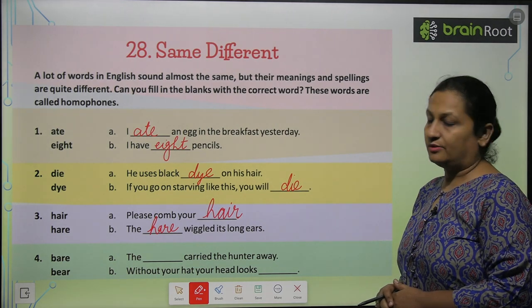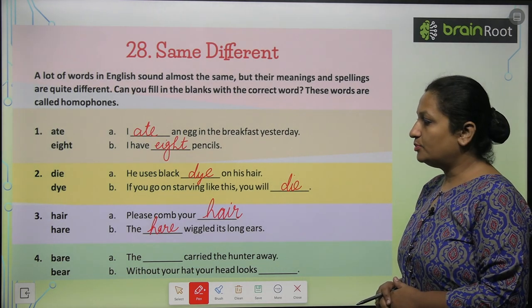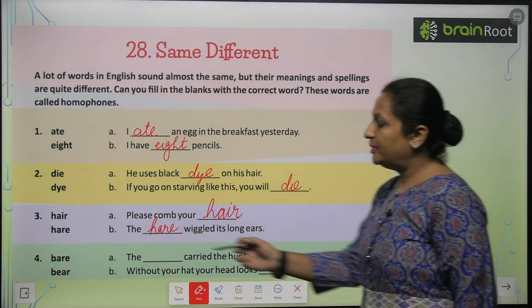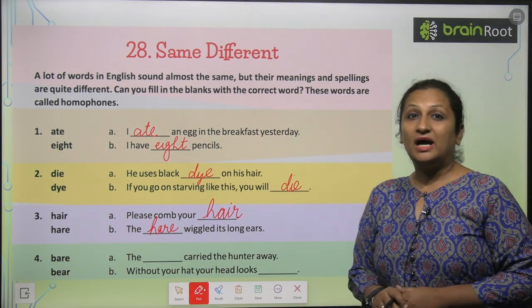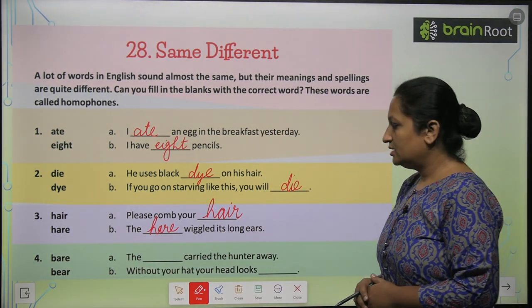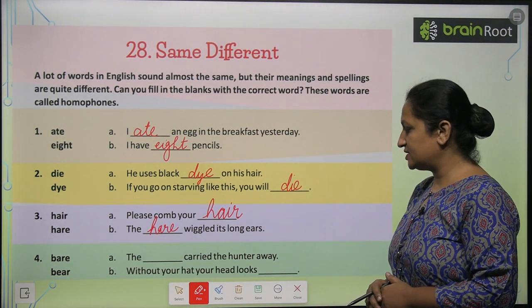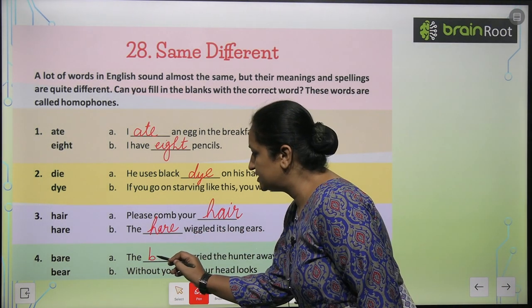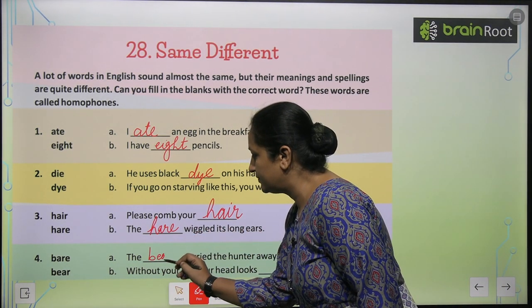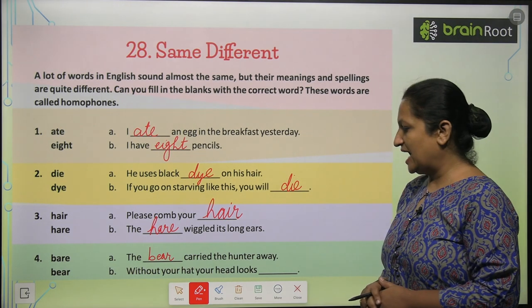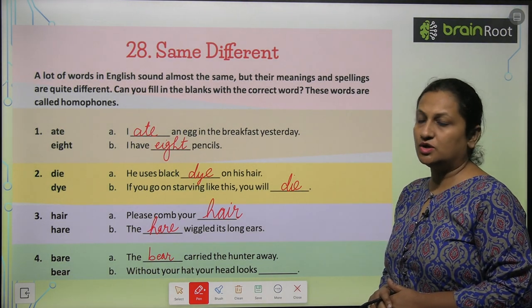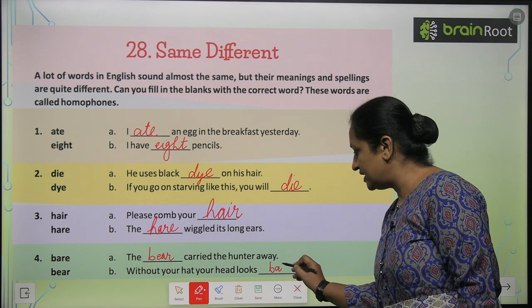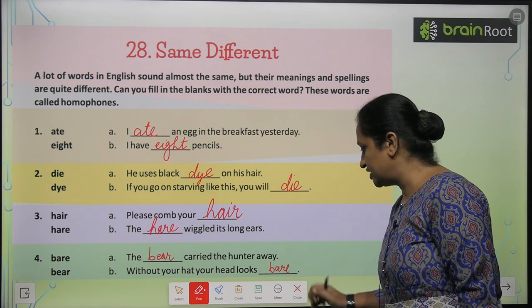'Bare' and 'bear'. 'Bare' means khali, and 'bear' means bhalu. The dash carried the hunters away — so 'the bear carried the hunter away.' Without your hat your head looks dash — toh aap yahaan pe B-A-R-E put karenge.